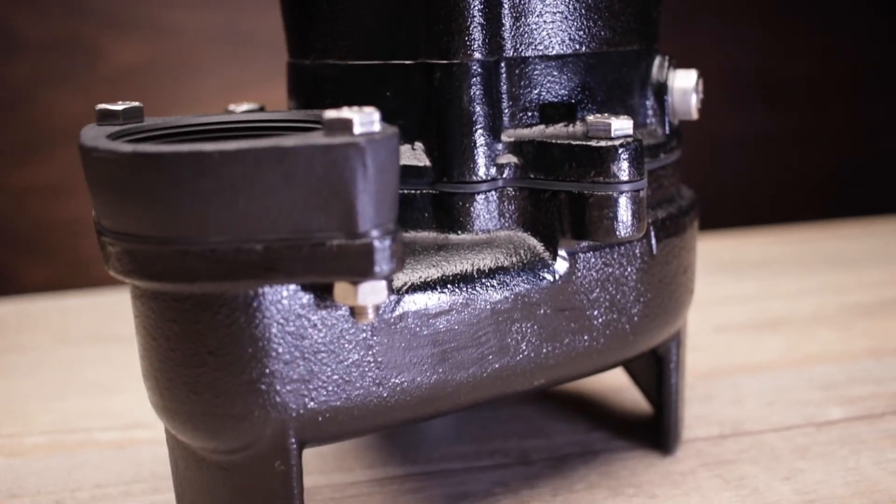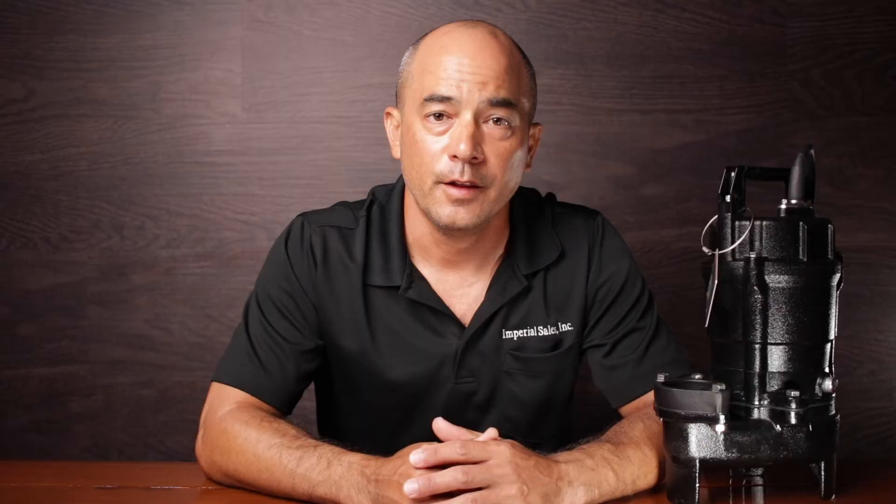It can pass solids up to an inch and 3 eighths or 35 millimeters. The 50 UT 2.4 S runs at peak efficiency pumping 40 gallons per minute at 18 feet of head.